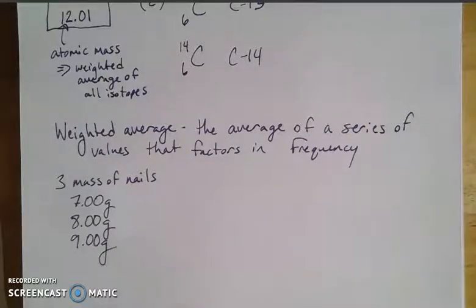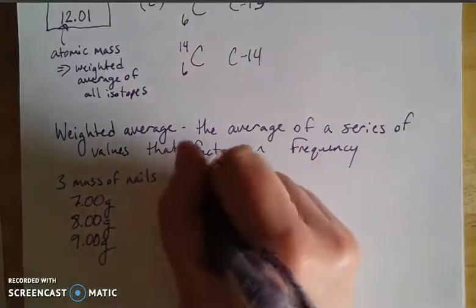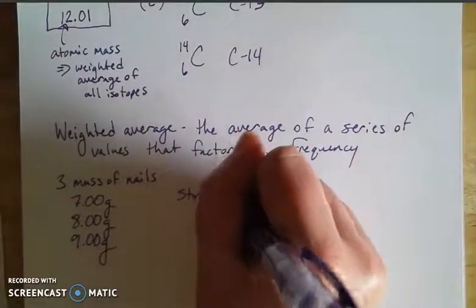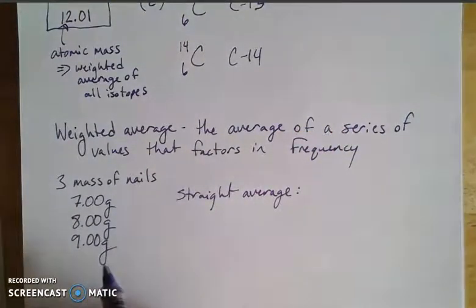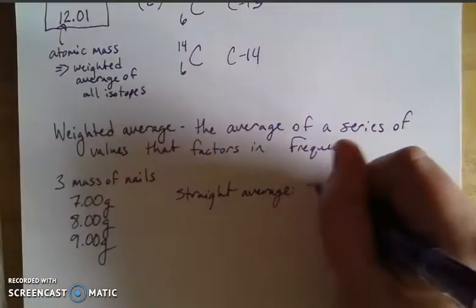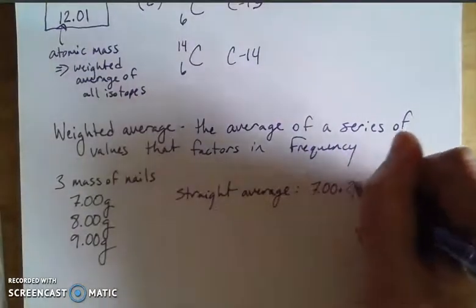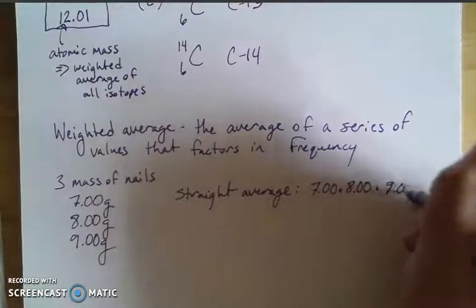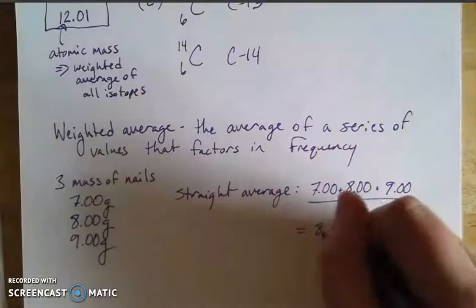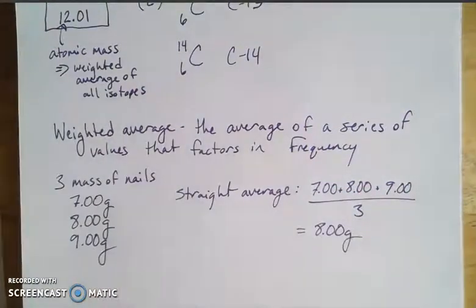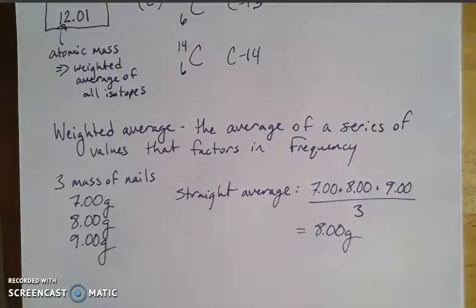If I take a straight average of 7, 8, and 9 grams, I sum them and divide by three — the way we've always averaged — and I get 8 grams right in the middle. But what if I went to the hardware store, pulled out a thousand of these nails, and counted the frequency of each mass?